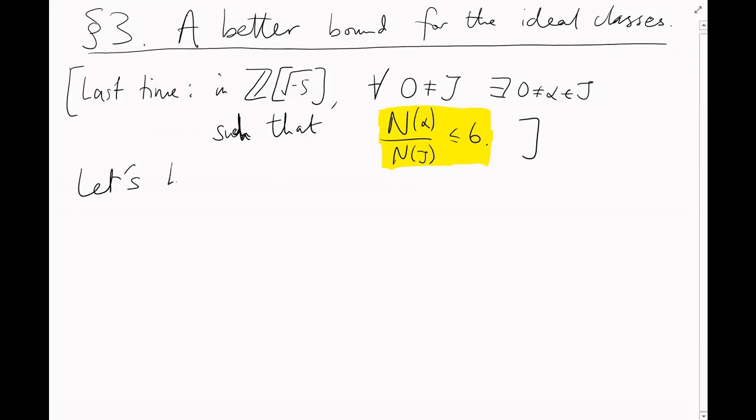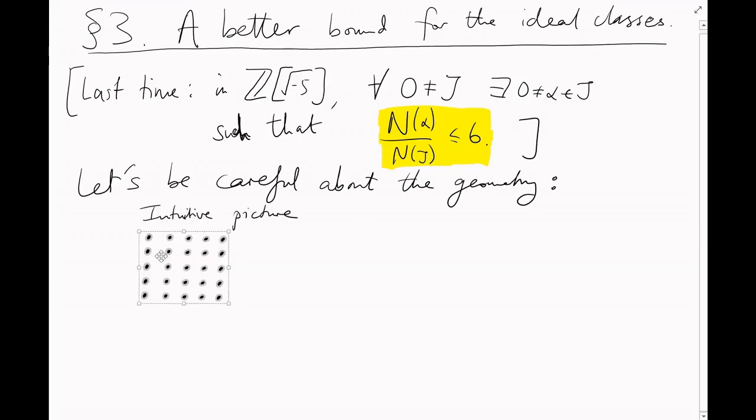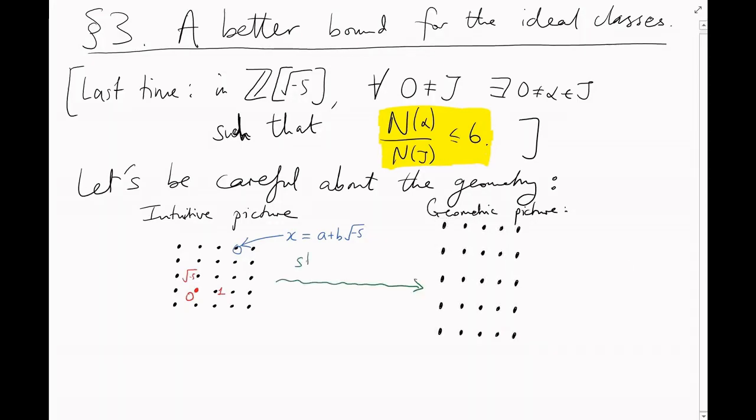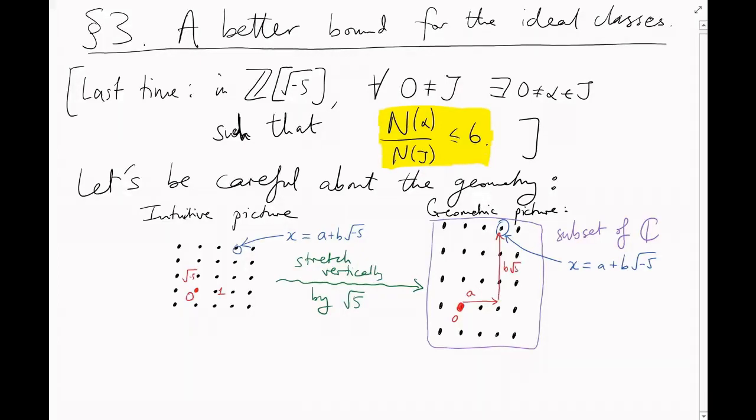Now that we're doing some geometry, let's be careful about our pictures. We've always drawn this intuitive additive picture on the left, but it's going to be useful for us to stretch it vertically by a factor of root 5, and consider it as sitting inside the complex plane. So the point a plus b root minus 5 now has real part a, and imaginary part b root 5. So the norm of an element, a squared plus 5b squared, is really just the square of its distance from the origin.